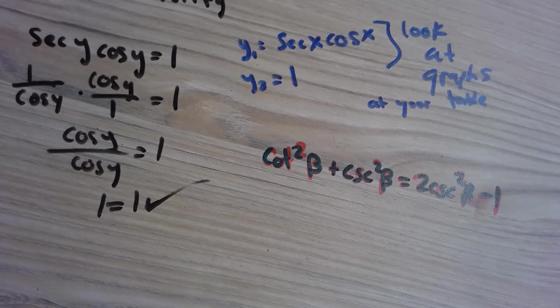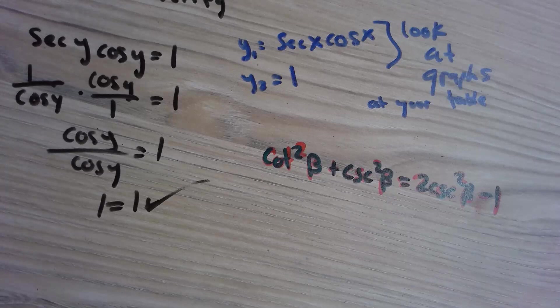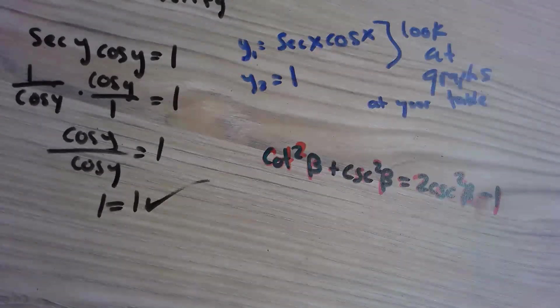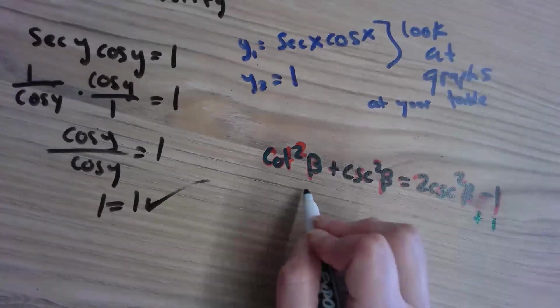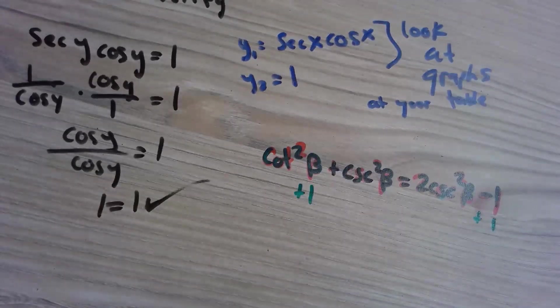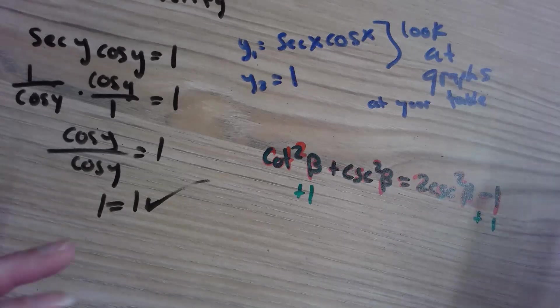All these squares and that one makes me want to look at my Pythagorean identities on my page. I know cotangent, one plus cotangent squared theta is cosecant squared theta, so what if I took and added this one over.